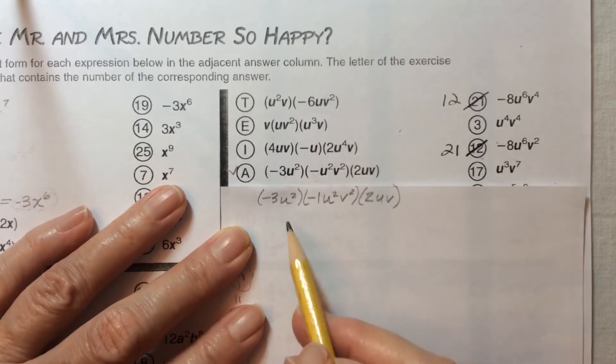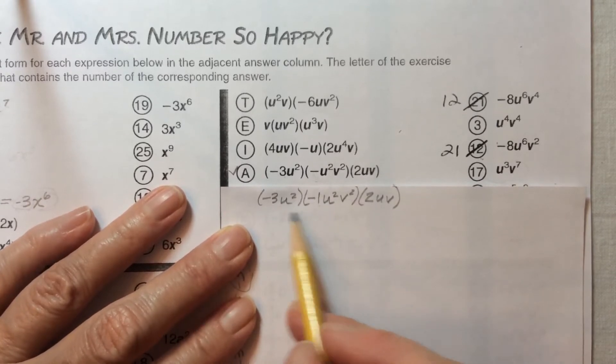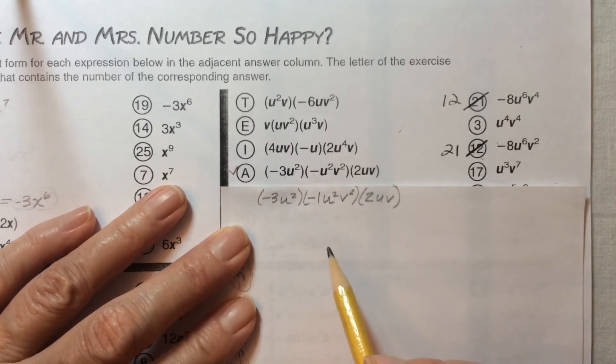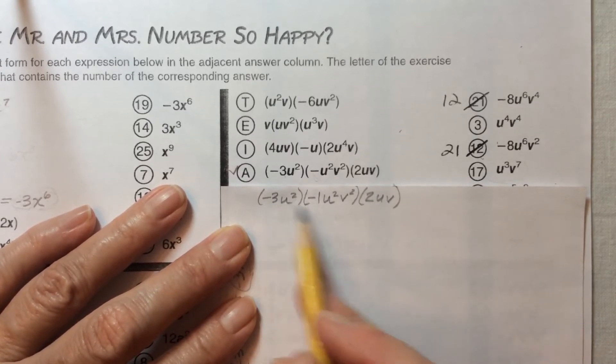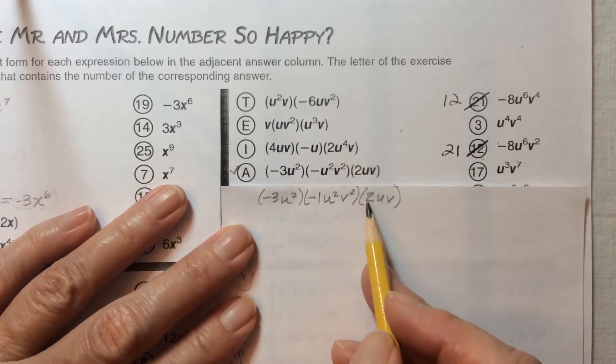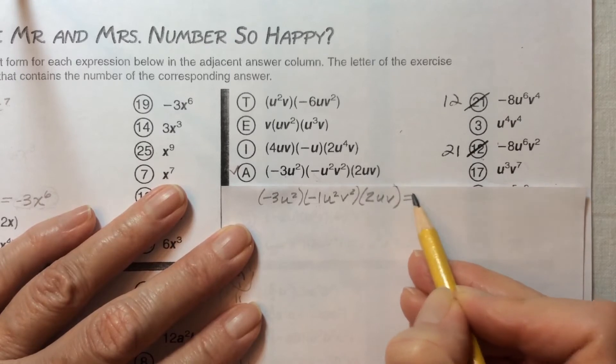Now that we've made that invisible one visible, it's easier to multiply the coefficients. Negative 3 times negative 1 is positive 3, because a negative times a negative is positive. So positive 3 times positive 2 equals 6.